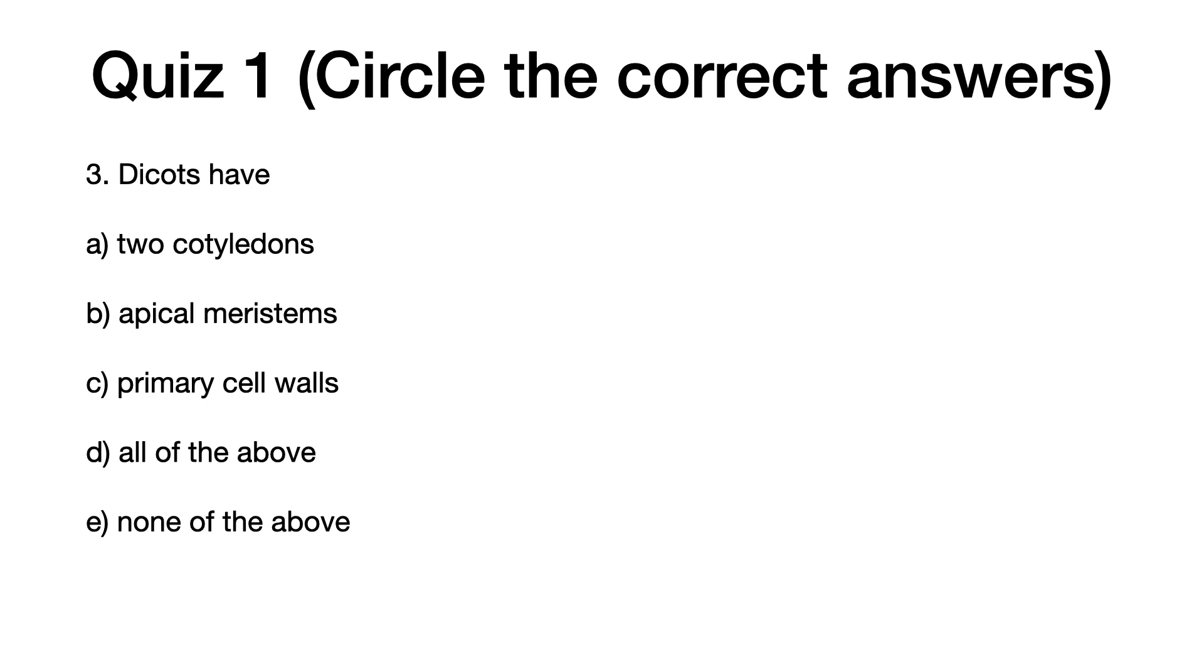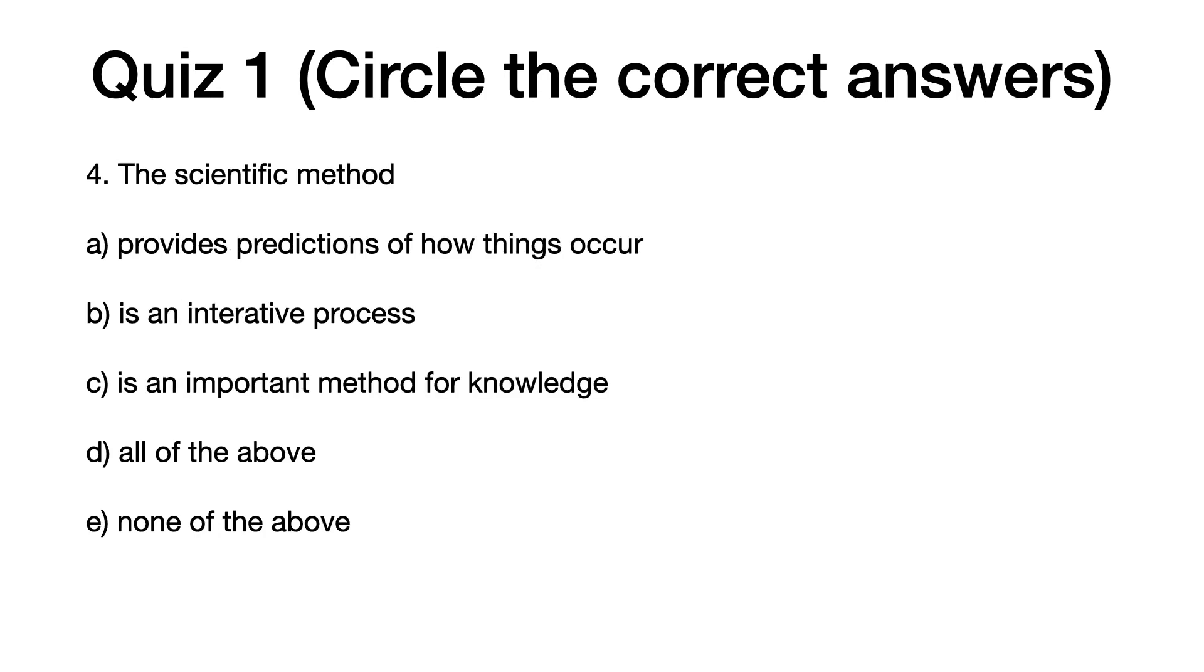Question three: Dicots have a) two cotyledons, b) apical mirror stems, c) primary cell walls, d) all of the above, or e) none of the above.